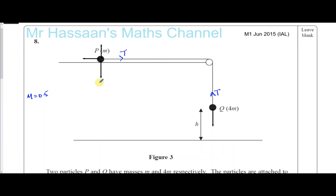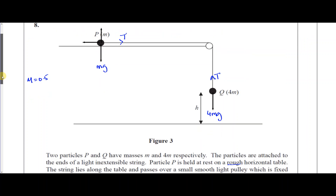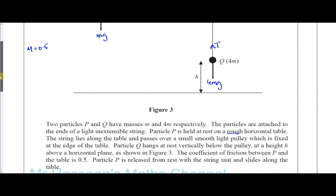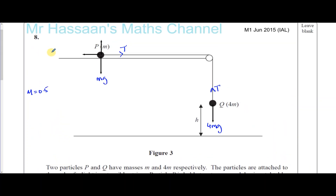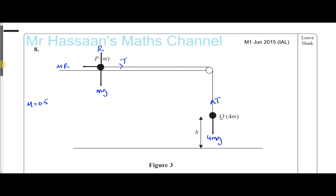The weight of P is Mg and the weight of Q is 4Mg. The frictional force equals F_max because the particle is sliding — so F has reached its maximum value, which is mu times R. And here we have R, the reaction force. Those are all the forces acting on the two particles in this situation.